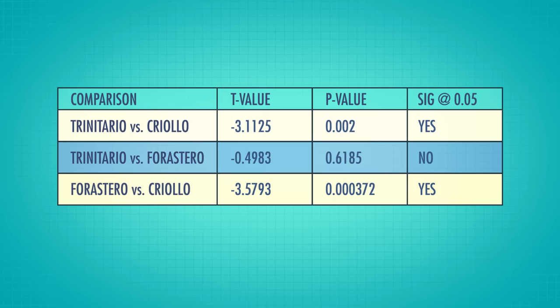Our ANOVA F-test told us that there were some differences, and our follow-up t-tests told us where they were. Criollo beans are generally considered a delicacy and of much higher quality than Forastero, and Trinitario are a hybrid of the two. But we found in this dataset that Criollo bars had statistically significantly lower ratings. This might be because we excluded bars with combinations of bean types, or because the rater has a different preference, or be caused by some other unknown factor — like who made the chocolate or the country of origin of the beans.